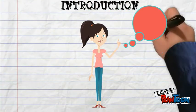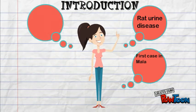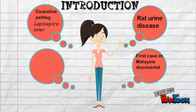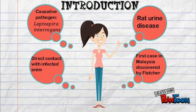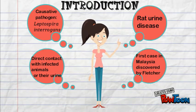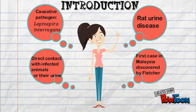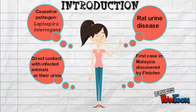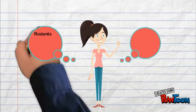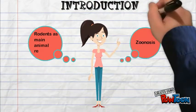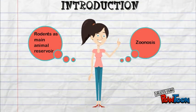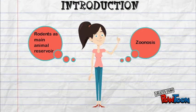Leptospirosis is also known as rat urine disease, as it is commonly associated with rats. The first case of Leptospirosis in humans was in the year 1925 in Malaysia. The pathogen causing the infection is Leptospira interrogans. It occurs through direct contact with infected animals or their urine. It is called zoonosis because it is transmitted from animals to humans.